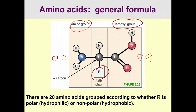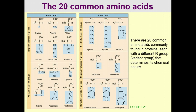There are 20 common amino acids, grouped based on whether their R side chain is polar hydrophilic or nonpolar hydrophobic. The 20 common amino acid side chains are shown here; the R group is highlighted in blue. Each box is separated by whether the R group is nonpolar, polar, or positively or negatively charged.